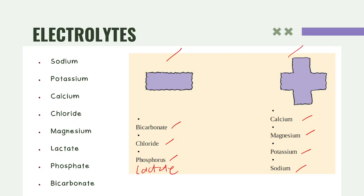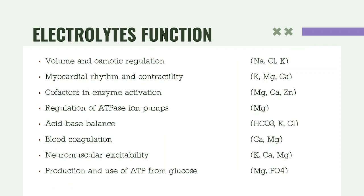Other than grouping electrolytes by electric charge, we can also group them by function. In terms of volume and osmotic regulation, we have sodium, chloride, and potassium. For myocardial rhythm and contractility, we have potassium, magnesium, and calcium. In terms of being a cofactor — now that we are done with enzymes, you can relate — examples include magnesium, calcium, and zinc.